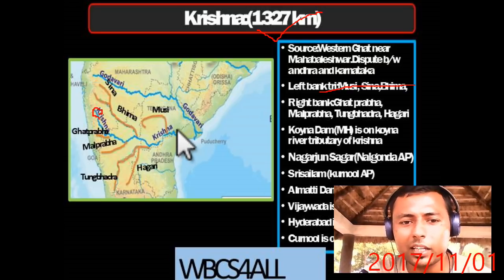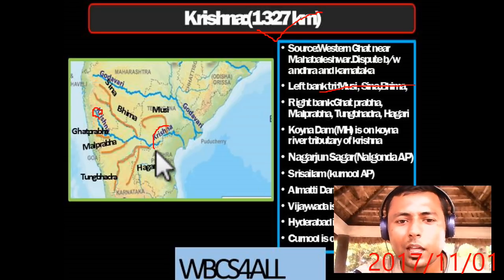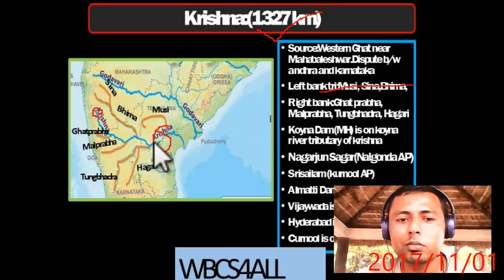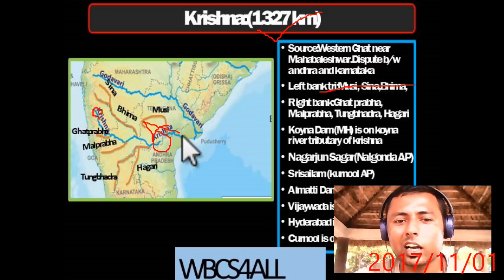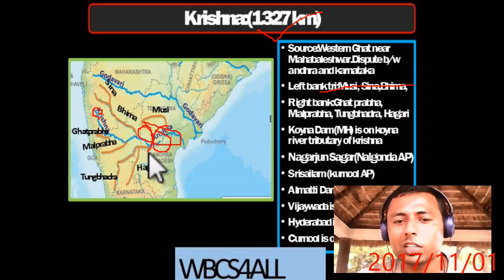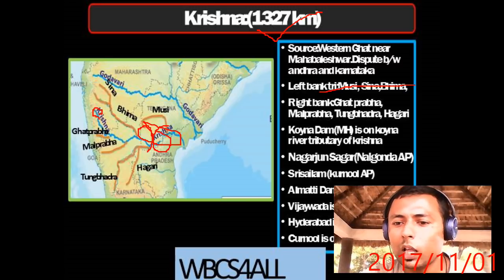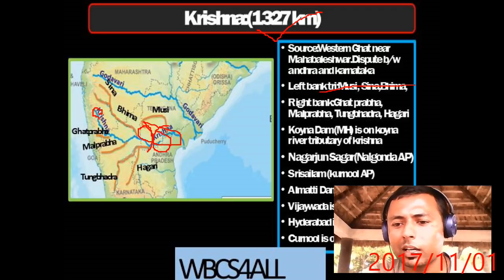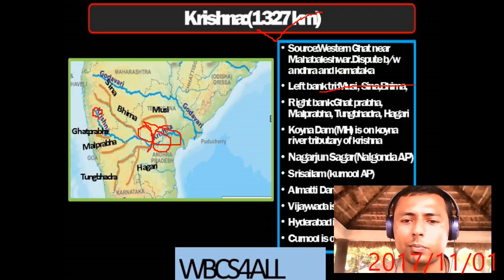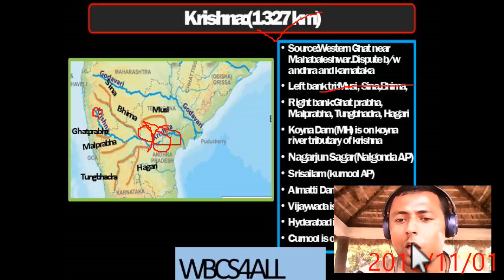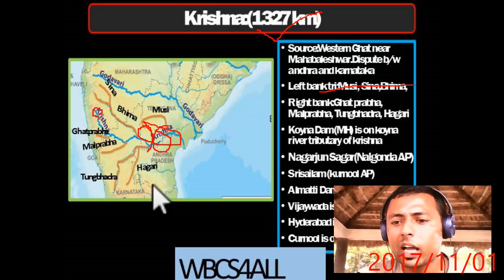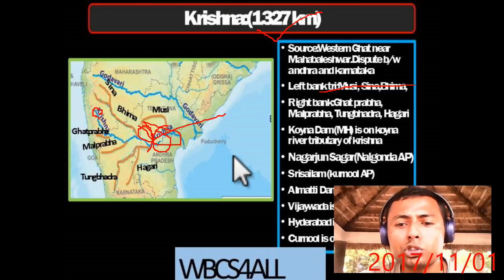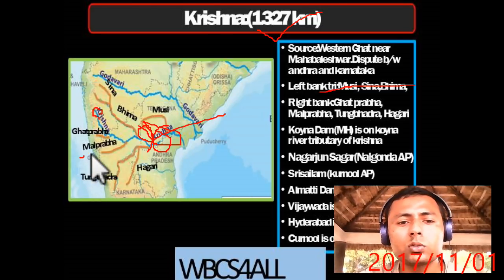Nagarjunasagar Dam is located in Andhra Pradesh on the Krishna River; it is also a dispute between Andhra and Karnataka. Srisailam Dam is in Kurnool, Andhra Pradesh. Almatti Dam is in Karnataka on the Krishna River. Vijayawada is located on the Krishna River. Hyderabad is located on the Musi River. Kurnool is located on the Tungabhadra River. Tungabhadra Dam is on the Tungabhadra River.